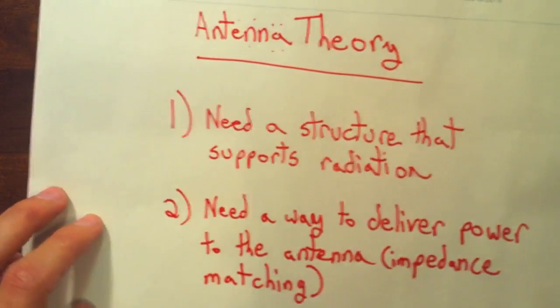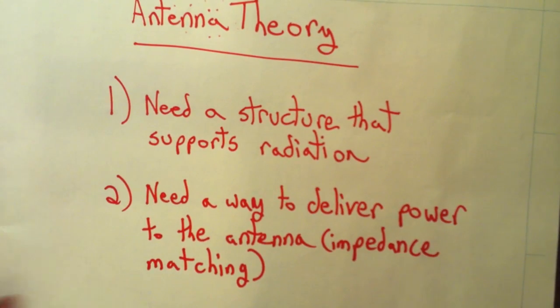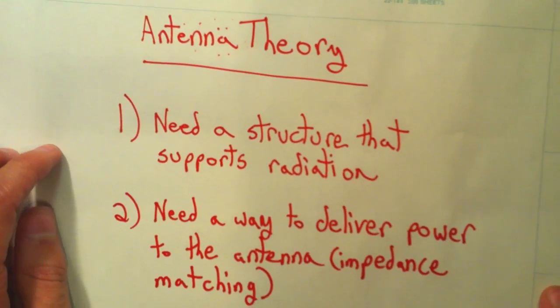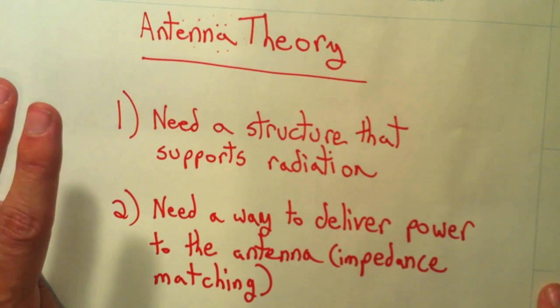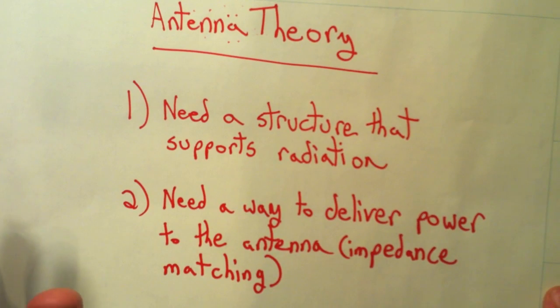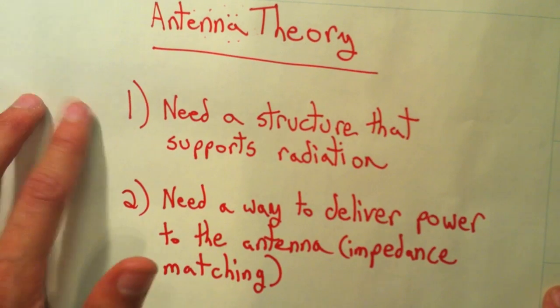And here is antenna theory. There's two fundamental things you need. One, it's a structure that supports radiation. And two, you need a way to deliver power to the antenna, which is concerned with impedance matching or just finding a way to get power there.